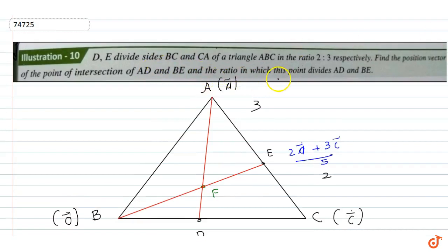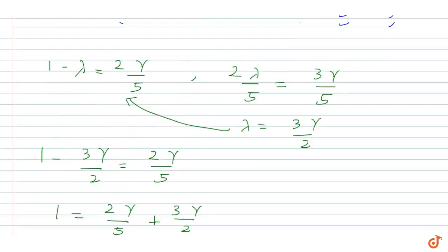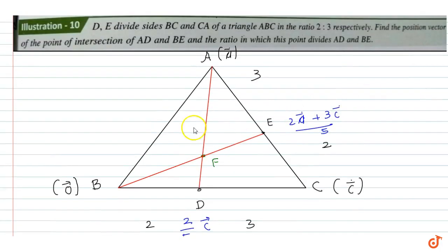Now to find the ratio in which the point divides AD and BE: since gamma = 10/19, the ratio in which F divides BE is 10:9.